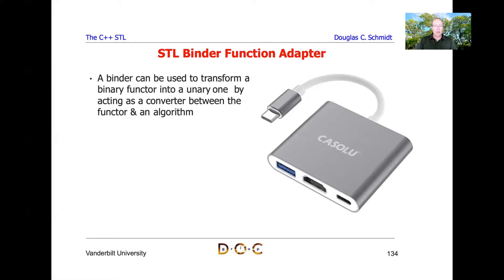Binders can be used to transform a binary functor into a unary one by acting as a converter between the functor and an algorithm. Just like if you have a Mac computer, you're probably hauling around adapters everywhere because newer Macs use USB-C connectors, but there's all kinds of stuff out there that wants USB-B, HDMI, and so on. You often need an adapter — and that's basically the same idea here.